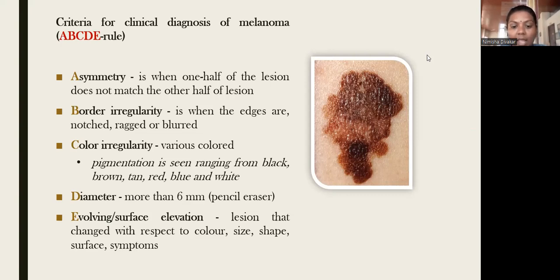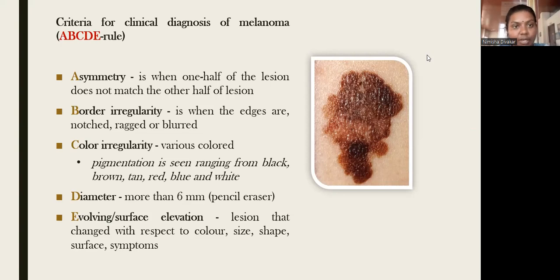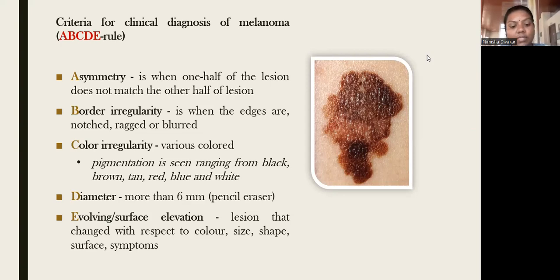E stands for evolving — the lesion is elevated at the surface and changes with respect to color, size, shape, and surface. So this is the ABCDE rule for the diagnosis of malignant melanoma.